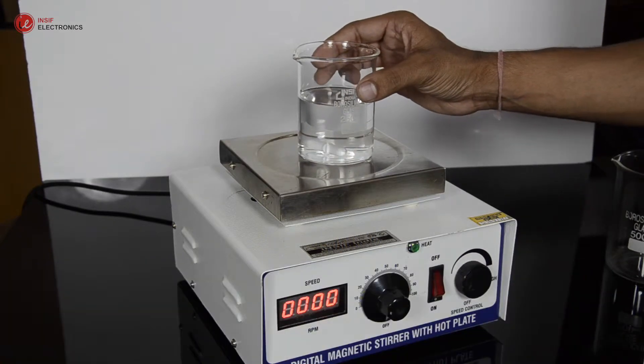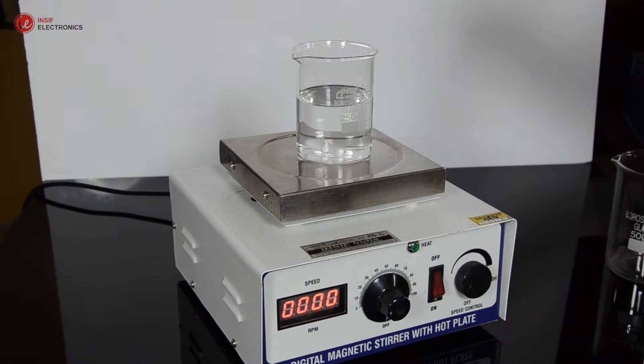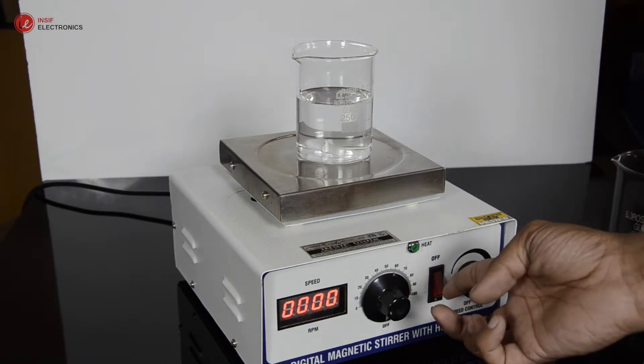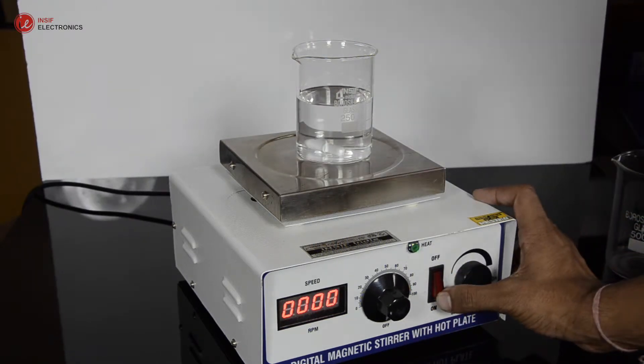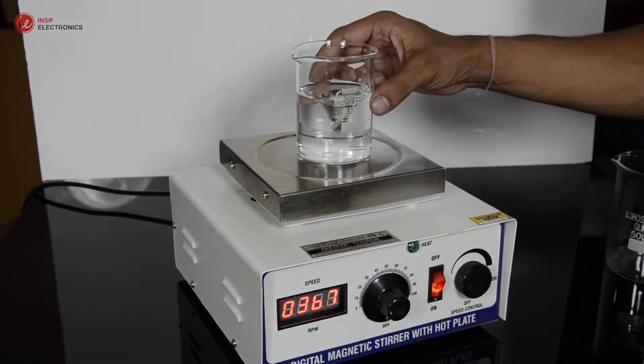A stir bar is immersed into the liquid, and the device generates a magnetic field as it causes the bar to rotate, thereby generating the vortex stirring of the liquid.